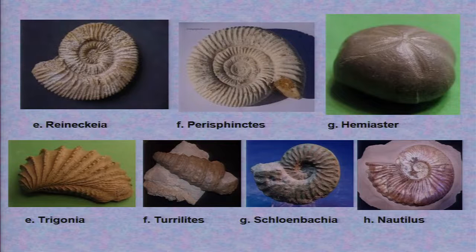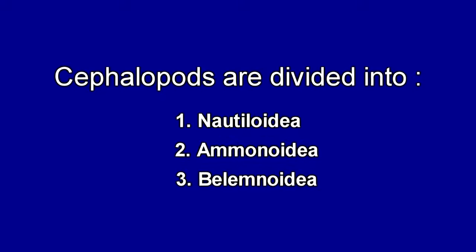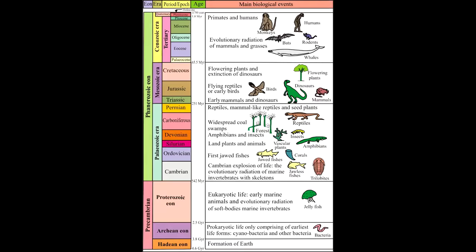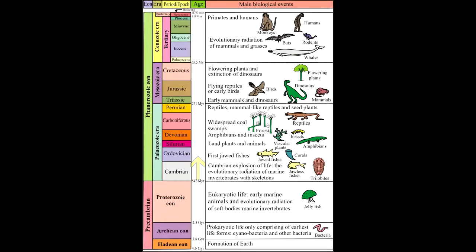I would like to talk something on Ammonoidia. As you know, Cephalopods are divided into three subsections: Nautiloidia, Ammonoidia, and Belemnites. All of them excluding Ammonoidia extend from Cambrian to the present day. Ammonoidia, though starting with the Cambrian period, became extinct at the end of the Cretaceous, coinciding with the extinction of dinosaurs.